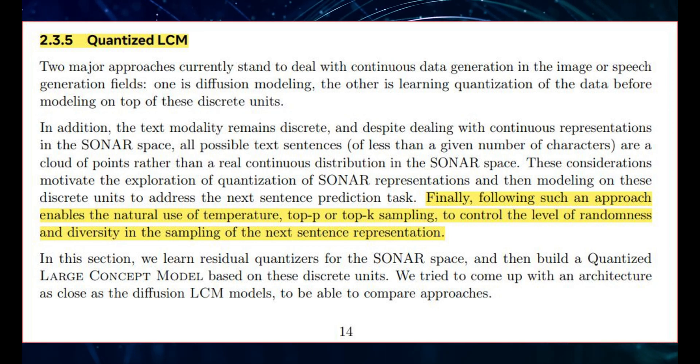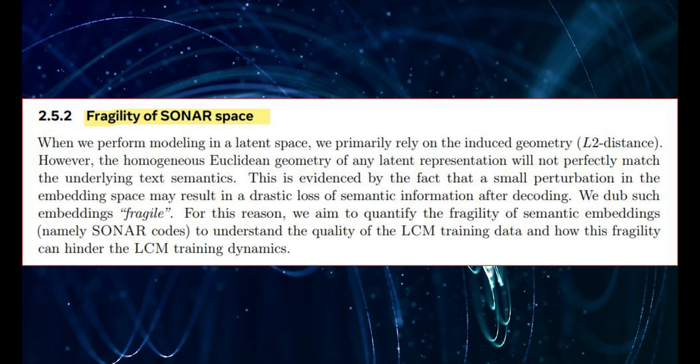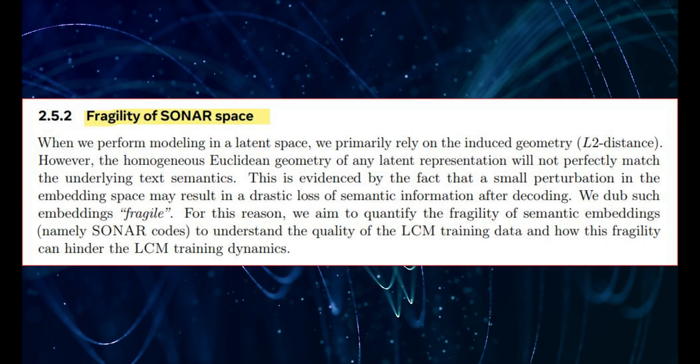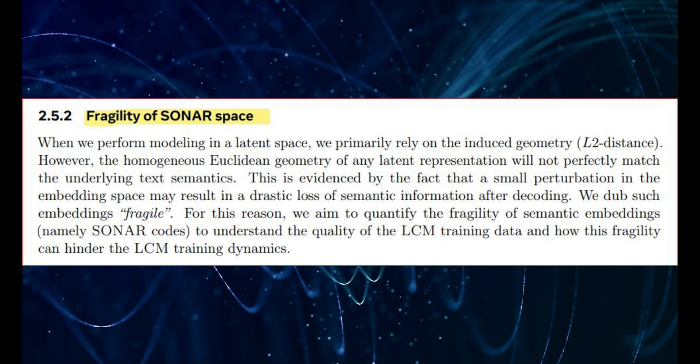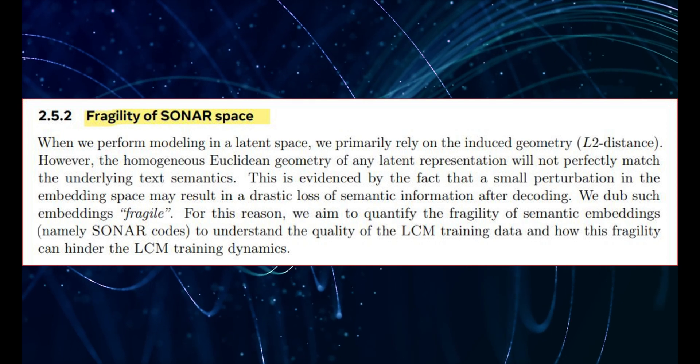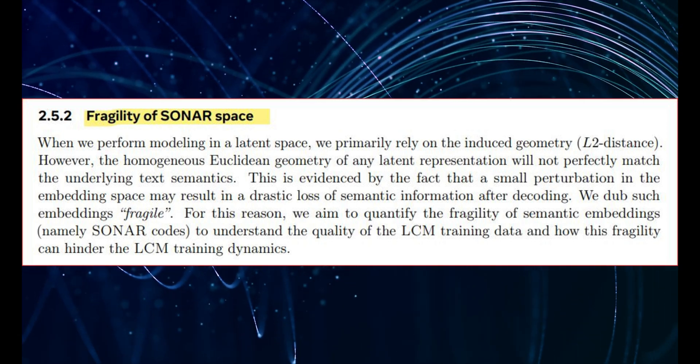They used something called RVQ for this, which stands for Residual Vector Quantization. Pretty complicated name, but the idea is simple. They also tried other loss-weighting strategies. Think of it like telling the model which parts of the text are more important to get right. Like saying, hey, pay extra attention to this sentence. It's crucial. This helps the model focus on what matters most. They use something called fragility. It is like how much a sentence changes if you make minor changes to the words.